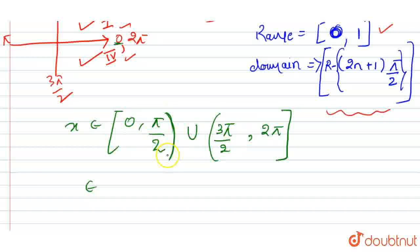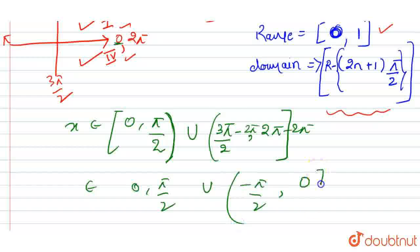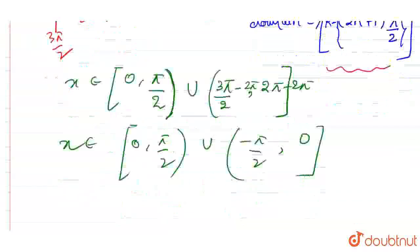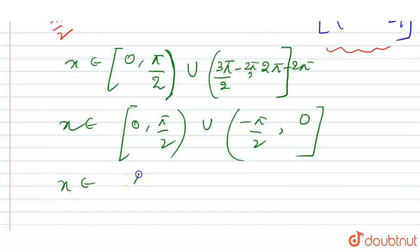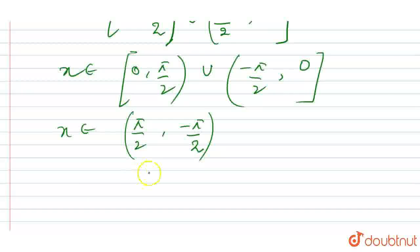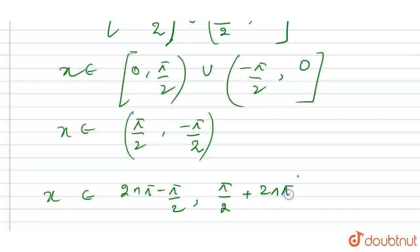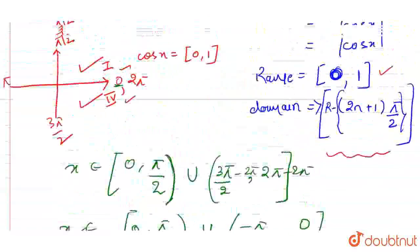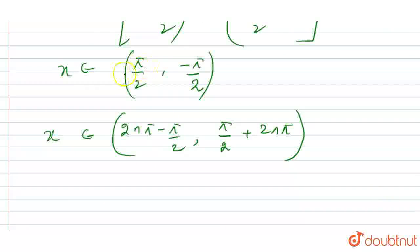To generalize this domain, we subtract 2 pi from both sides, giving us 0 to pi by 2 union (3π/2 − 2π) to 0, which is minus pi by 2 to 0. From here we can see that we can generalize x as from minus pi by 2 to pi by 2. Then we add and subtract 2nπ on both sides to get the generalized domain for the two functions.